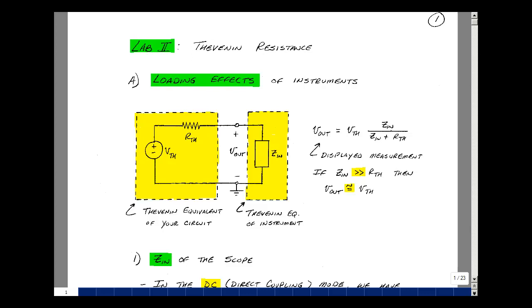This lesson deals with lab number two, Thevenin resistance. In ECE 201 and 202, we show that any linear circuit could be represented by a Thevenin equivalent.